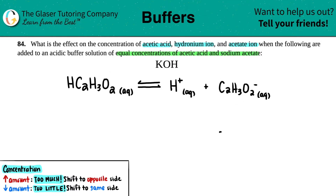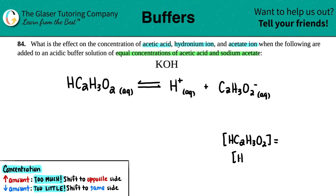So the first thing is I'm just going to write that down. We basically need to know what's going to happen to the acetic acid, HC₂H₃O₂, whether that's going to increase, decrease, or remain the same. What's going to happen to the hydronium ion concentration, H+, and what's going to happen to the acetate ion, C₂H₃O₂⁻.